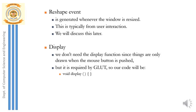Inside the display function, we define the graphics to show on the display window. Here, we want to draw a box wherever the mouse is clicked. The box drawing can be defined inside the display function or directly inside the mouse callback function — either is optional.